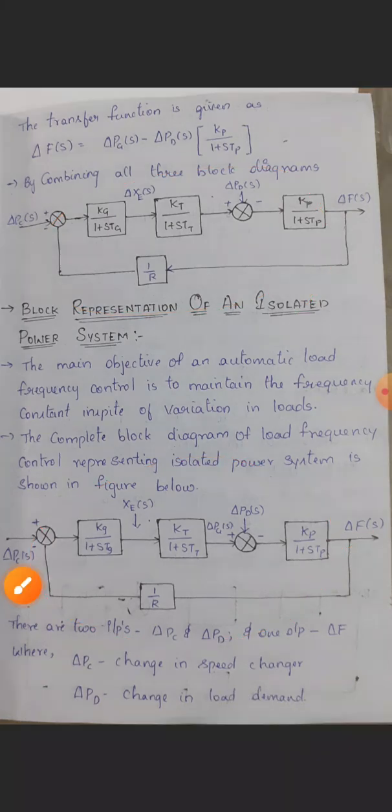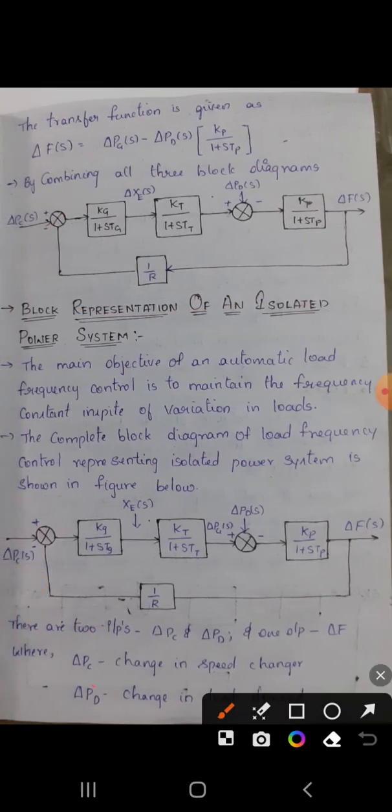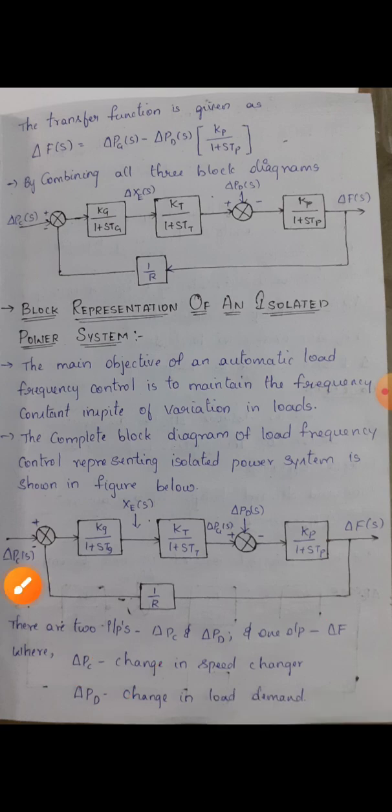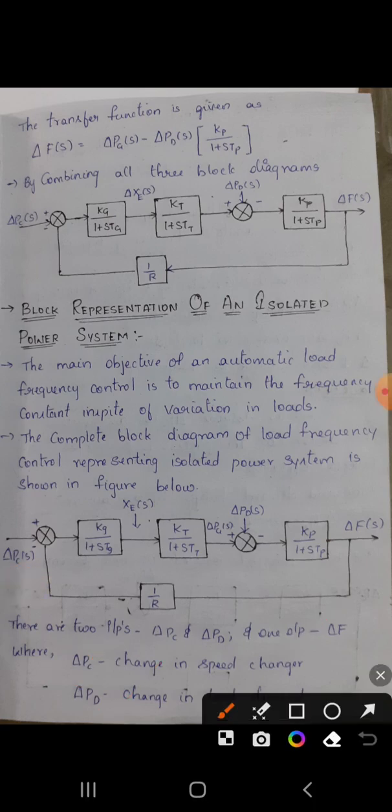Here, delta Pc(s) or delta Pc is the change in speed changer, and delta Pd is the change in load demand. So this block diagram is the main important topic for the third unit in PSOC subject.